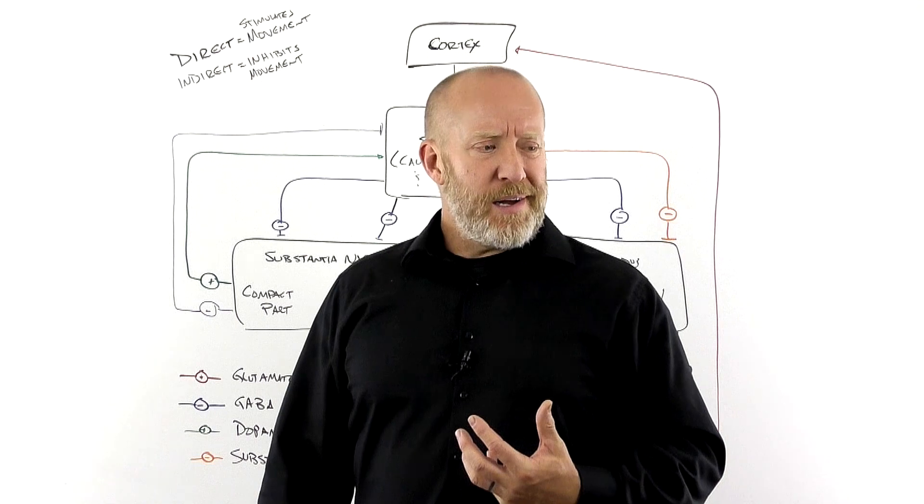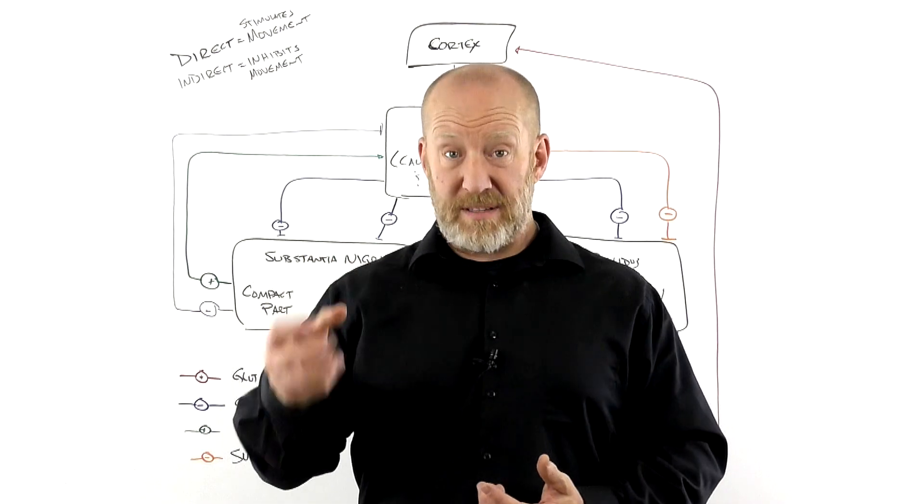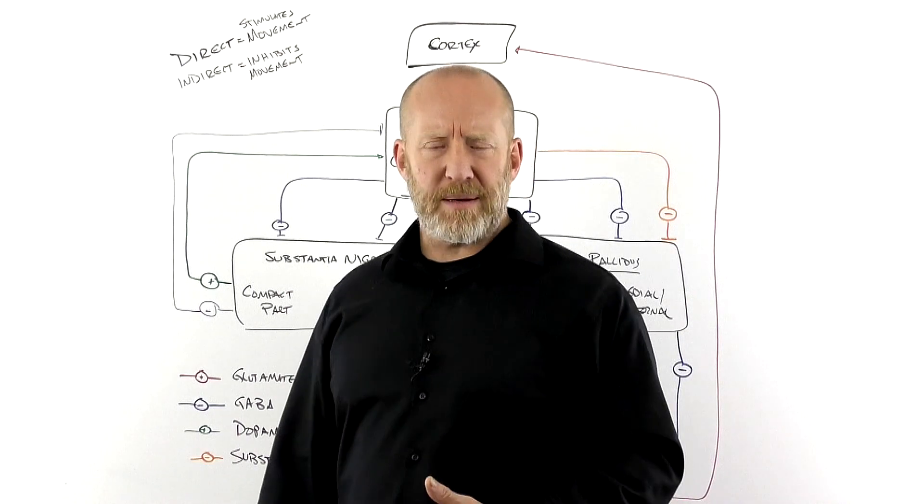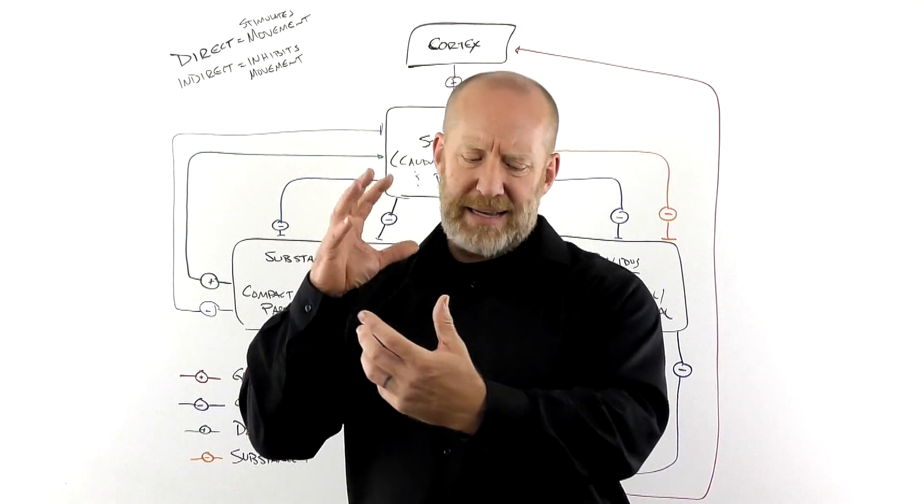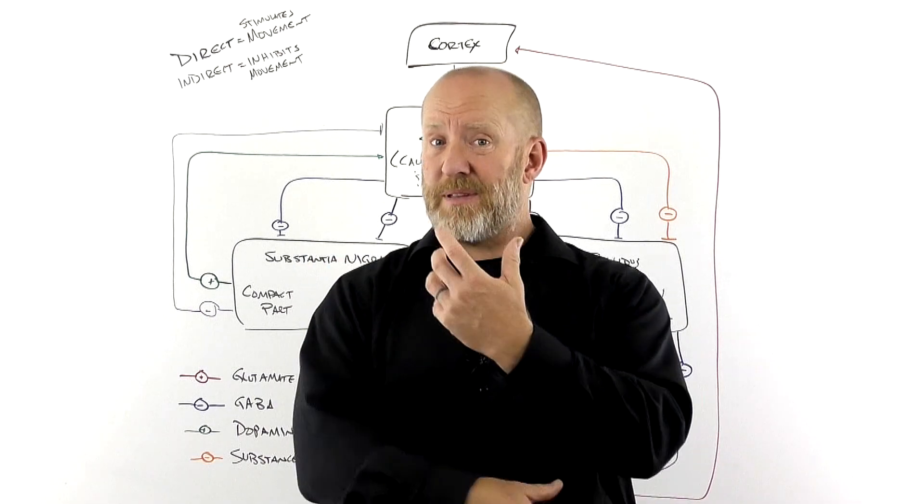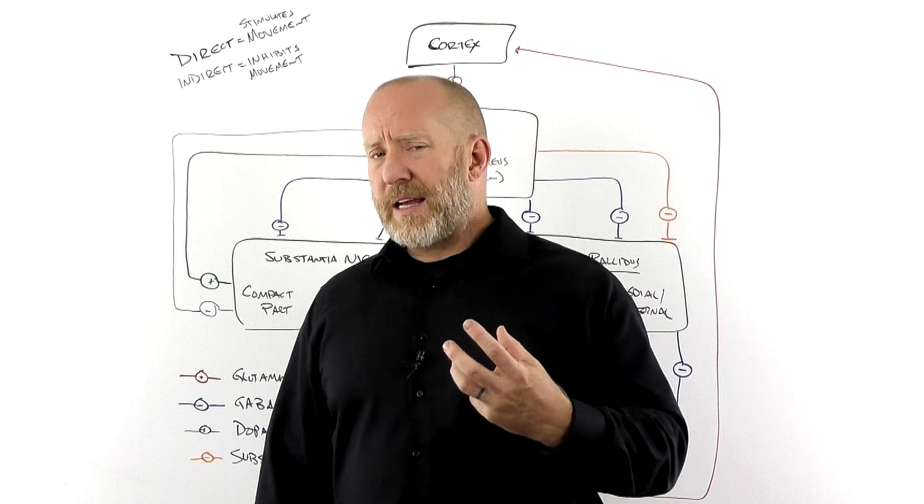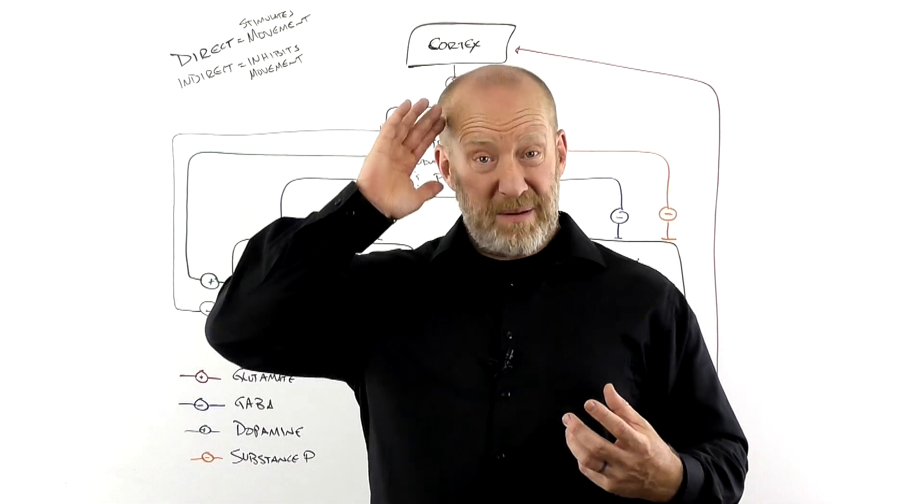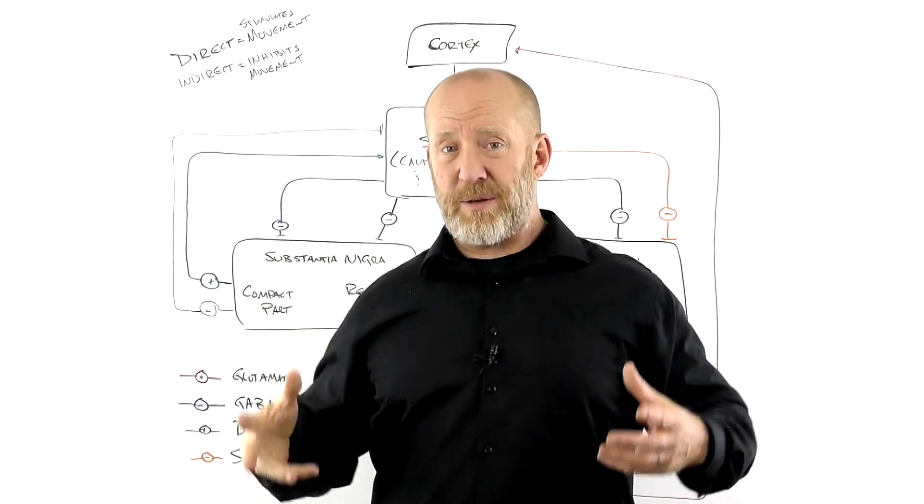Now, the basal ganglia helps to decide what muscles should be stimulated and which ones should be inhibited. For example, if you're bringing something to your mouth, you're probably going to stimulate your flexors and simultaneously inhibit your extensors. And it comes up with a plan and then sends it back to the cortex. And then the cortex executes it, the decision.